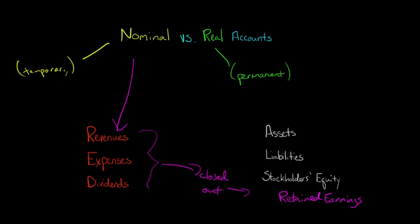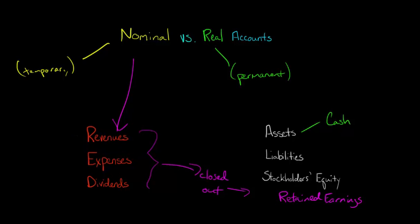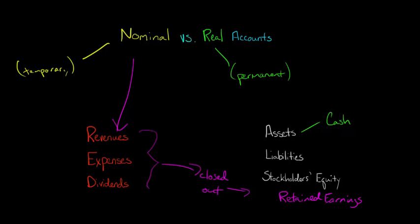What does that mean? If you look at the cash balance for General Electric as of its last balance sheet, that is the cash balance since the inception of the company — since the company began over 100 years ago. All the different transactions that have happened with the cash account up until the most recent balance sheet date make up that cash balance. It's not just what happened with cash in the most recent year. But if you look at General Electric's income statement and you see revenue, that's just revenue for the most recent quarter or year.